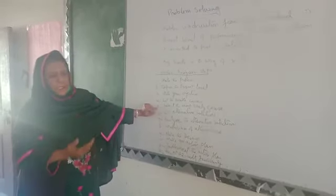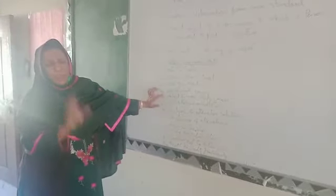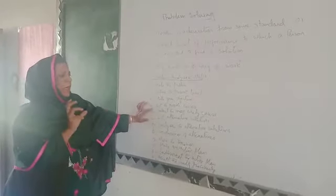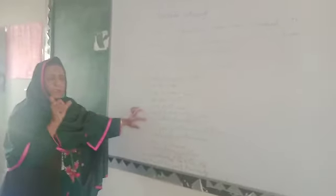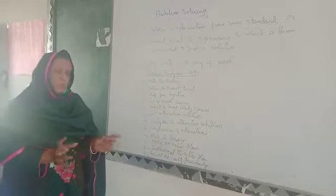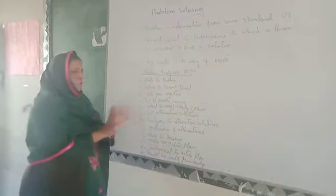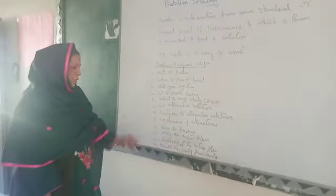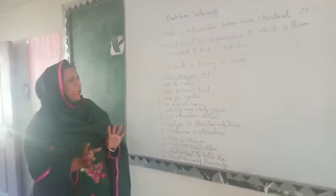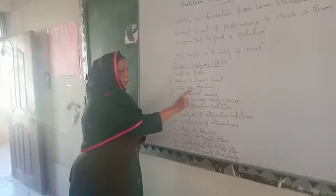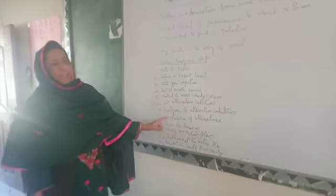Selecting the most likely cause is again a decision-making process. We have to analyze the possible causes and then select the most likely cause that is actually creating the problem. After identification of the most likely cause, we are in a position to find alternative solutions for that particular cause or problem. These solutions should always be possible within our organizational environment. A list of alternative solutions will be prepared, and each alternative should be analyzed carefully in light of its merits and demerits in relation to our organizational objective. This analysis will allow us to compare the alternatives with each other.